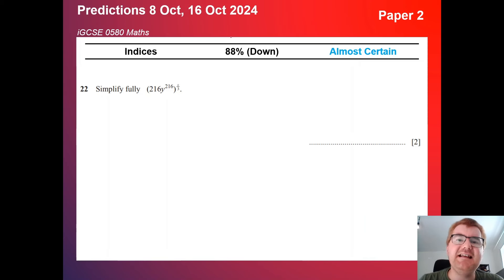On to indices here at 88%. So we are slightly down into the almost certain category. However, these are usually short questions to answer. This is a very common one here. So we have 216 to the power of two thirds. They love putting this question in where you have a coefficient in front and you have to apply the two thirds to both parts of what's in the bracket. Important topic to cover. Usually not that many marks, but it could be that difference between the B and an A or an A and an A star.